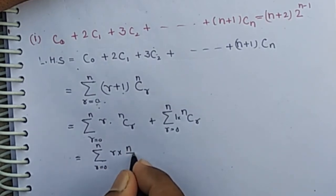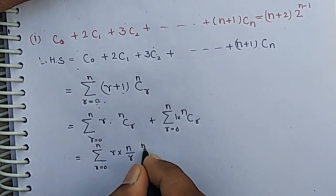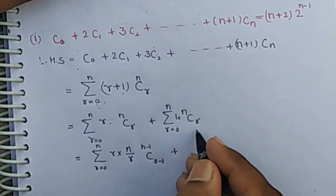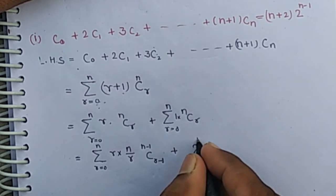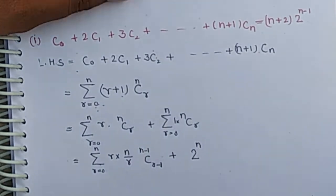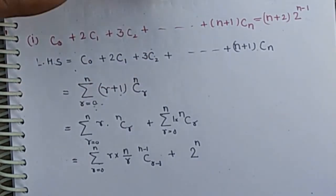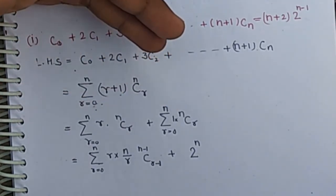This equals r into n by r times (n-1)C(r-1) plus it is the formula for 2 to the power n, because we put r equals 0 we get nC0, r equals 1 we get nC1 and so on, up to nCn.